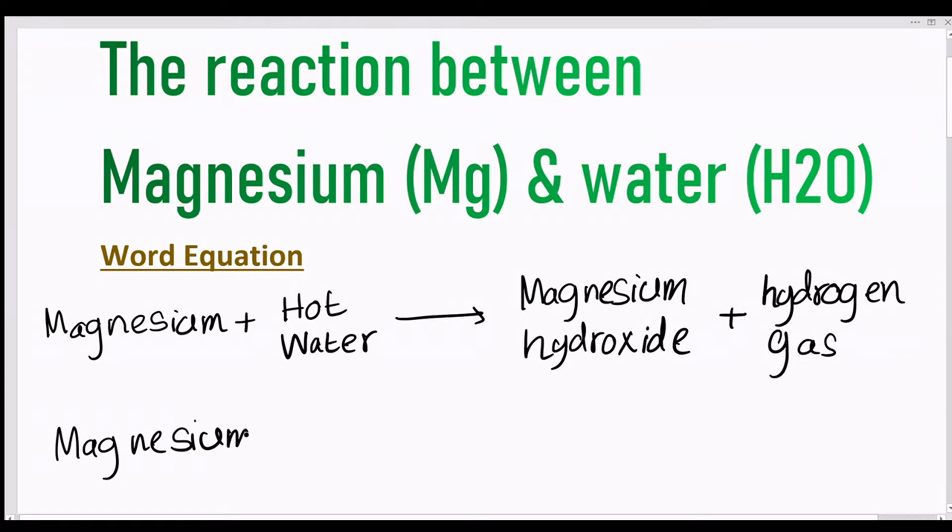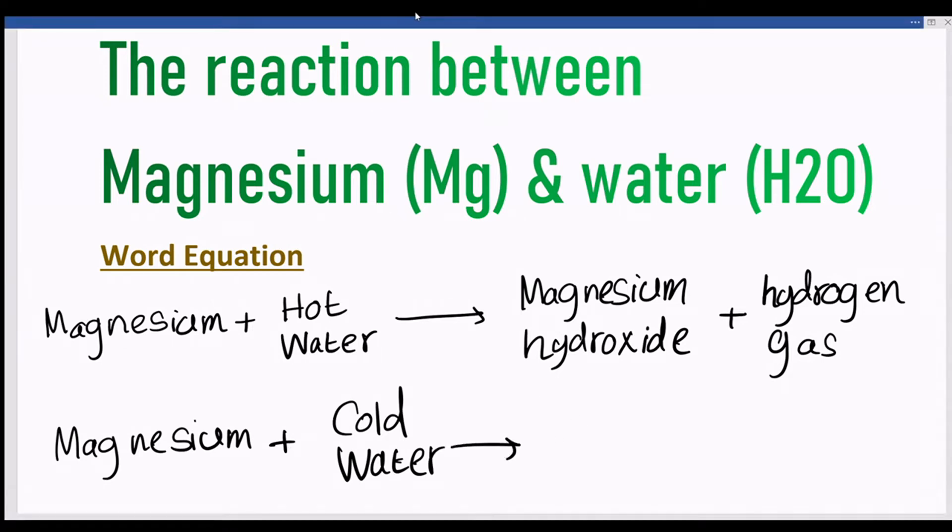Magnesium does not react with cold water because it becomes coated with magnesium hydroxide which is insoluble, preventing water from coming into contact with the magnesium.